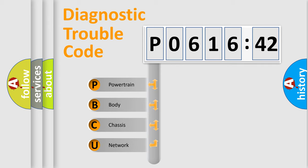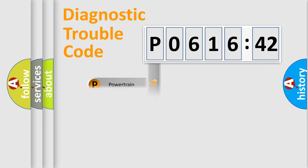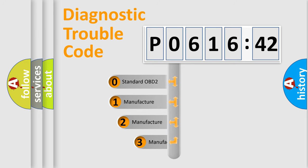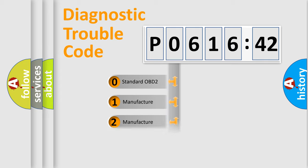If the second character is expressed as zero, it is a standardized error. In the case of numbers 1, 2, or 3, it is a manufacturer-specific error. The third character specifies a subset of errors. The distribution shown is valid only for the standardized DTC code. Only the last two characters define the specific fault of the group.